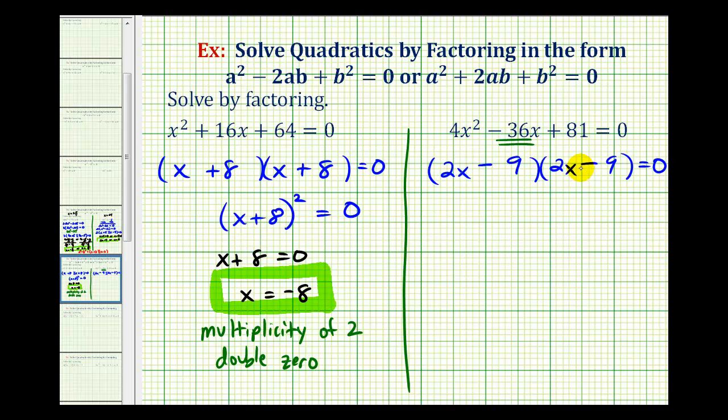And again notice how we have two equal factors here, so we can write this as the quantity (2x - 9)² = 0. Therefore this will only equal zero when the factor of 2x - 9 is equal to zero.